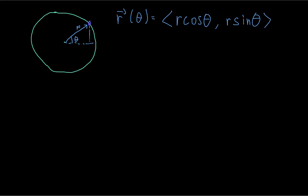Note that even though this position vector is written as a function of θ, it's also indirectly a function of time, because θ varies with time — as the particle moves around the circle, the angle is constantly changing. Now we want the velocity vector, which is the time derivative of the position vector, so we're going to differentiate this vector with respect to time.